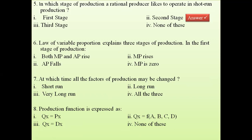Question 6: the law of variable proportion explains three stages of production. In the first stage of production, the options are: both MP and AP will rise, only marginal product rises, average product falls, or marginal product is zero. In the first stage, everything is rising, so the answer is both marginal product and average product are rising.